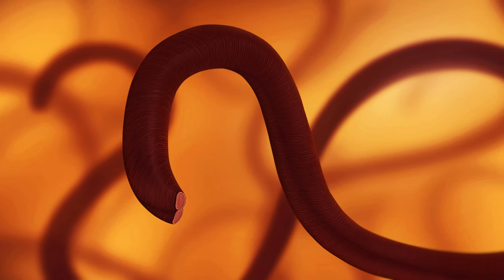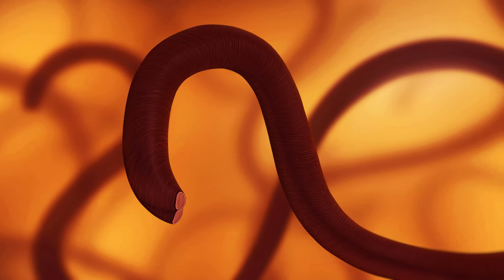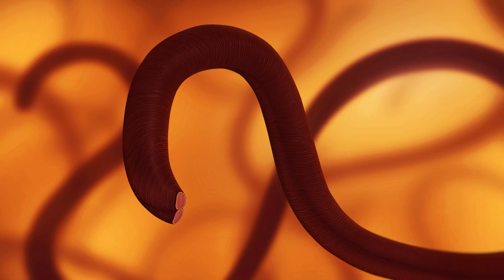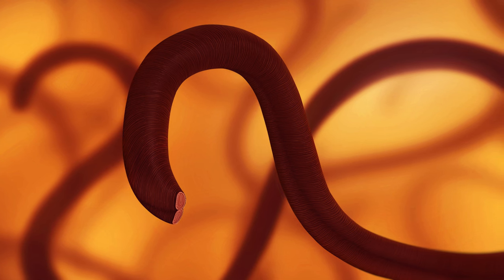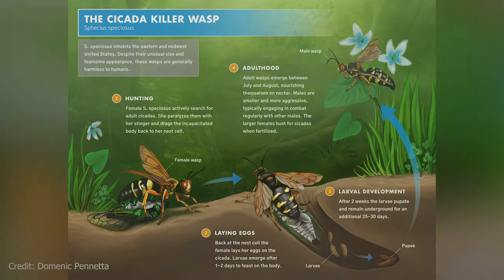Parasitism is an extremely effective ecological strategy, and it has independently evolved on Earth countless times. Like predation, it's a form of consumer-resource interaction, a term used to describe interspecies relationships within ecological food chains.